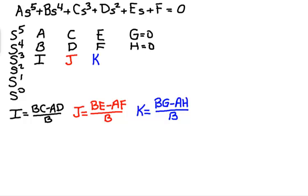Since G is zero and H is zero, therefore K is zero.